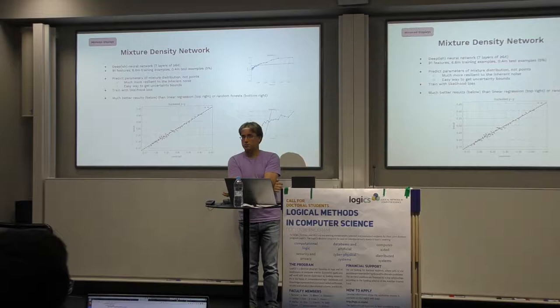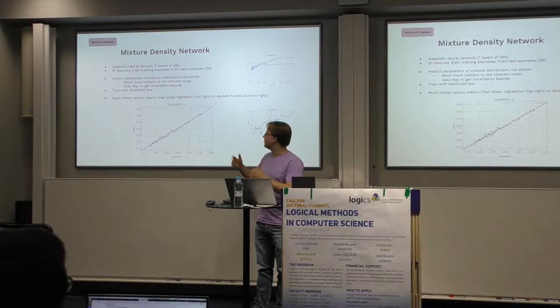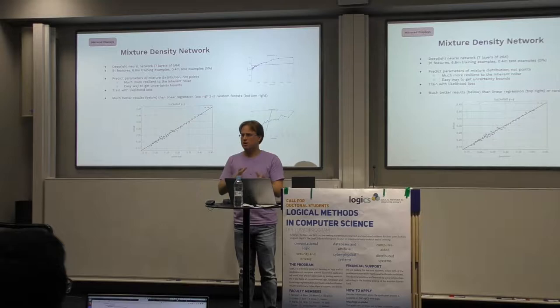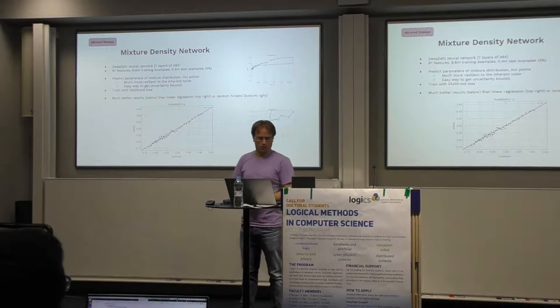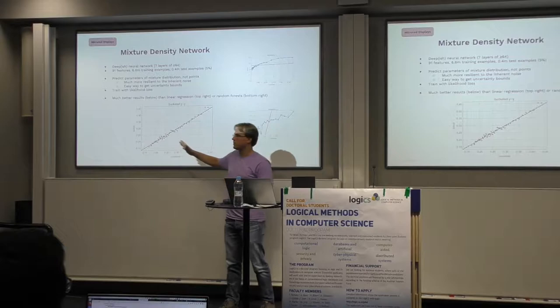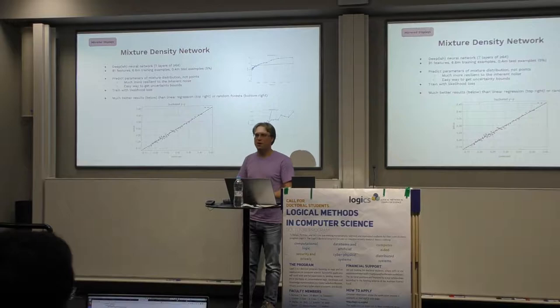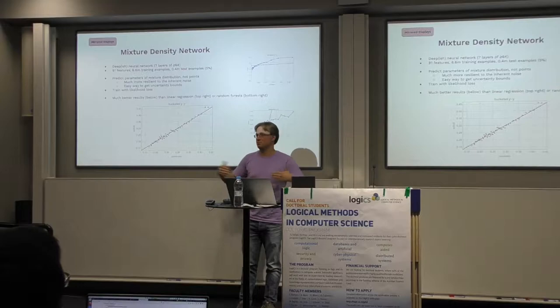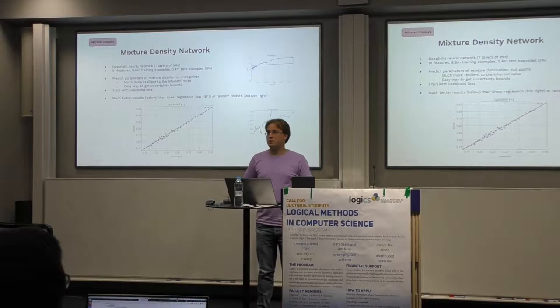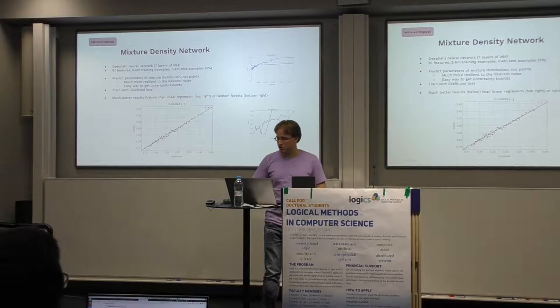A good way to handle this is using mixture density networks, which do not predict a single coding time but instead predict parameters of a mixture distribution. These networks are trained with a likelihood loss and are otherwise vanilla neural networks — slightly deeper architectures worked best. This allows us to sort coding changes ranging from those taking on average a bit over a quarter of an hour all the way to about three quarters of an hour — quite an amazing spread given the inherent variance of these distributions.